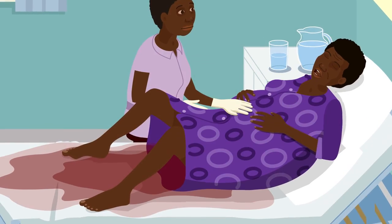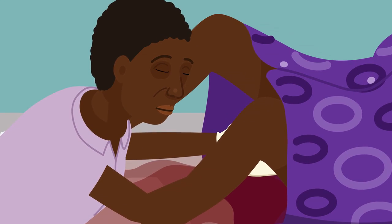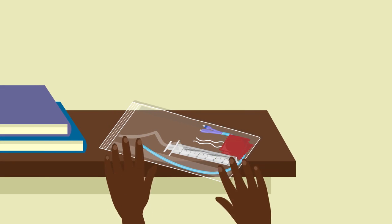Mary continues to bleed heavily. The normal methods to stop the bleeding have failed. Grace knows that Mary is losing too much blood and this is now an emergency. Grace must act quickly. She uses the UBT kit.